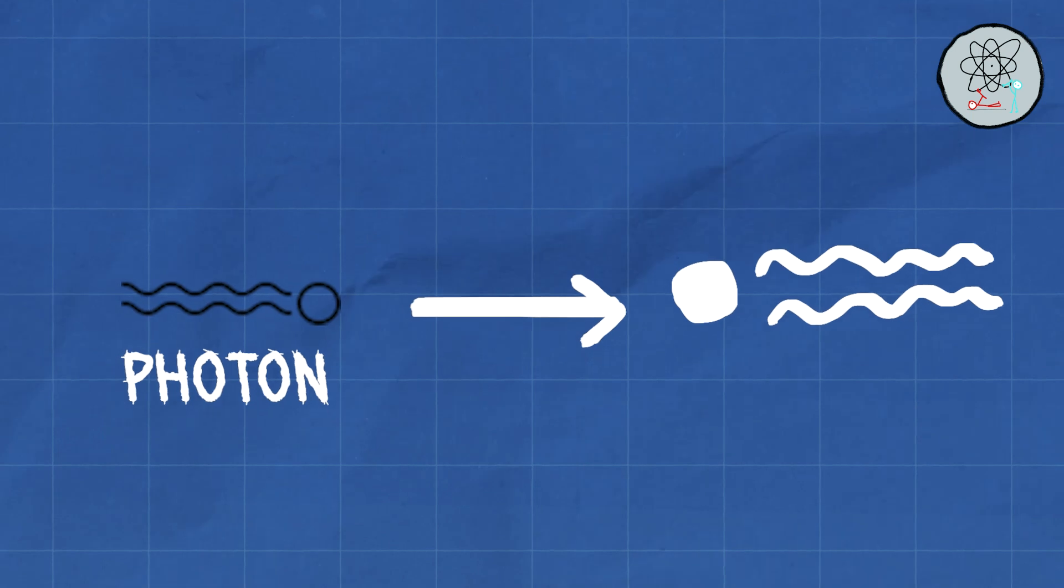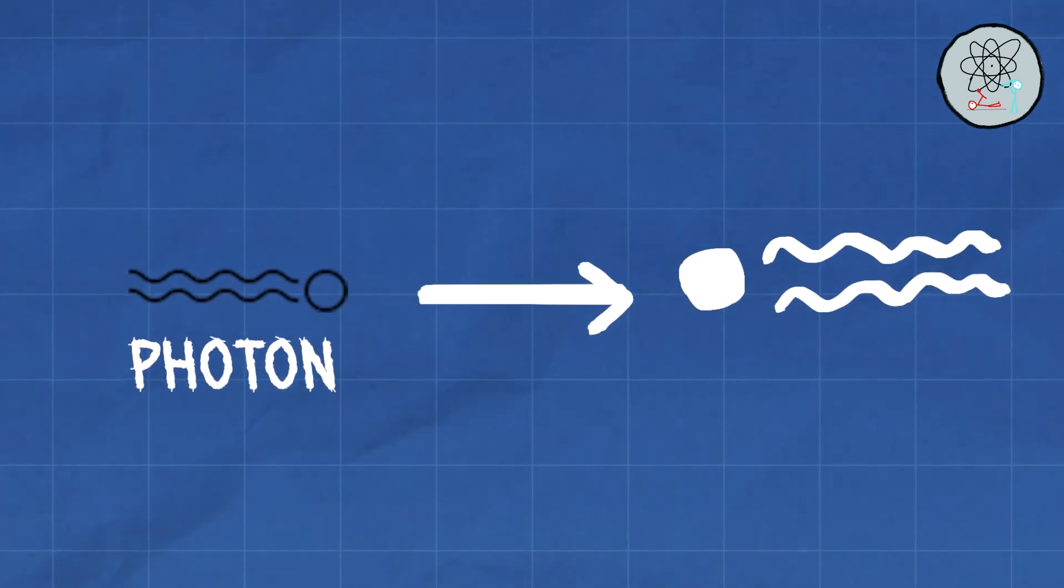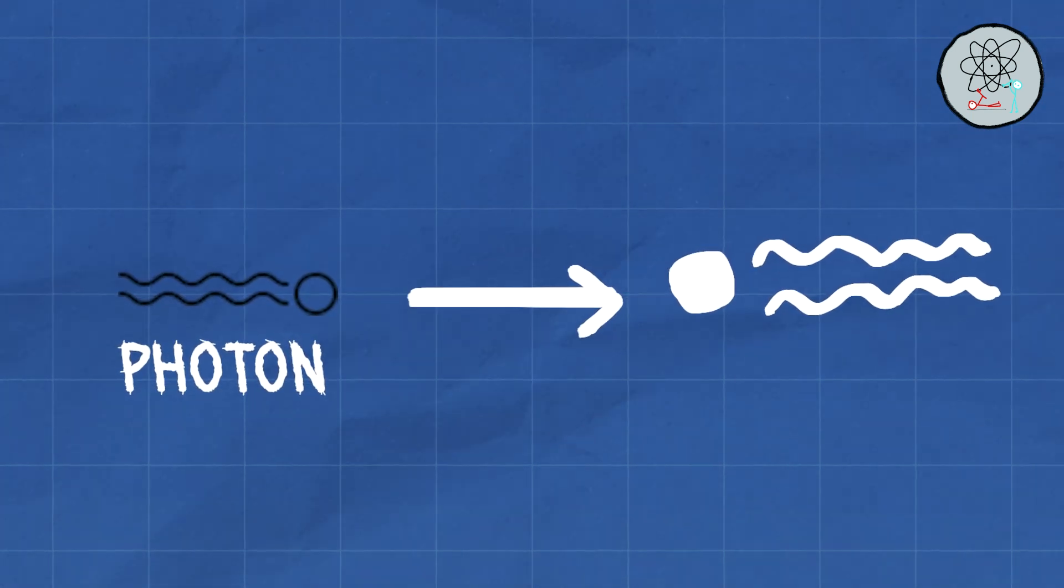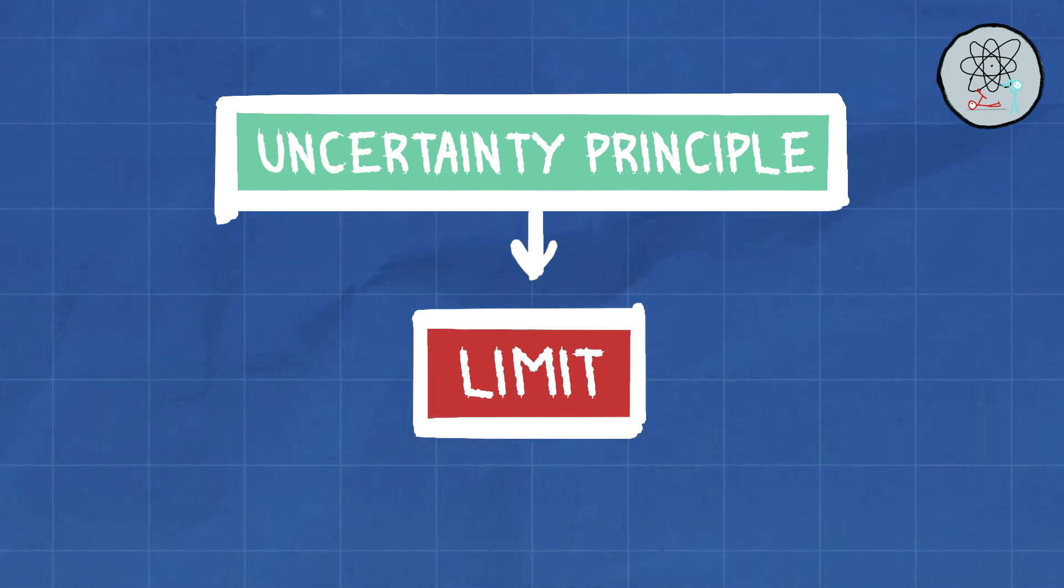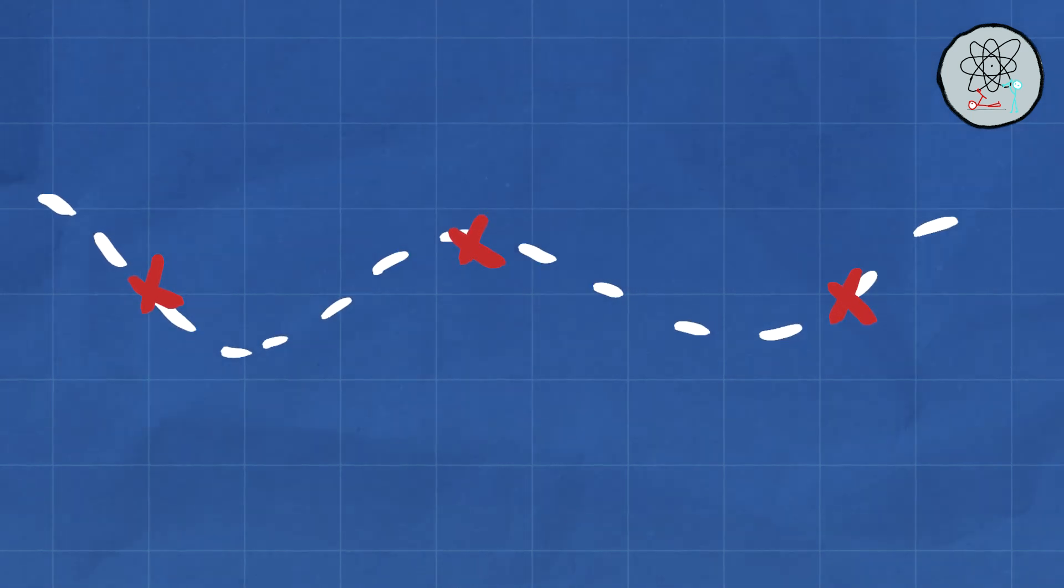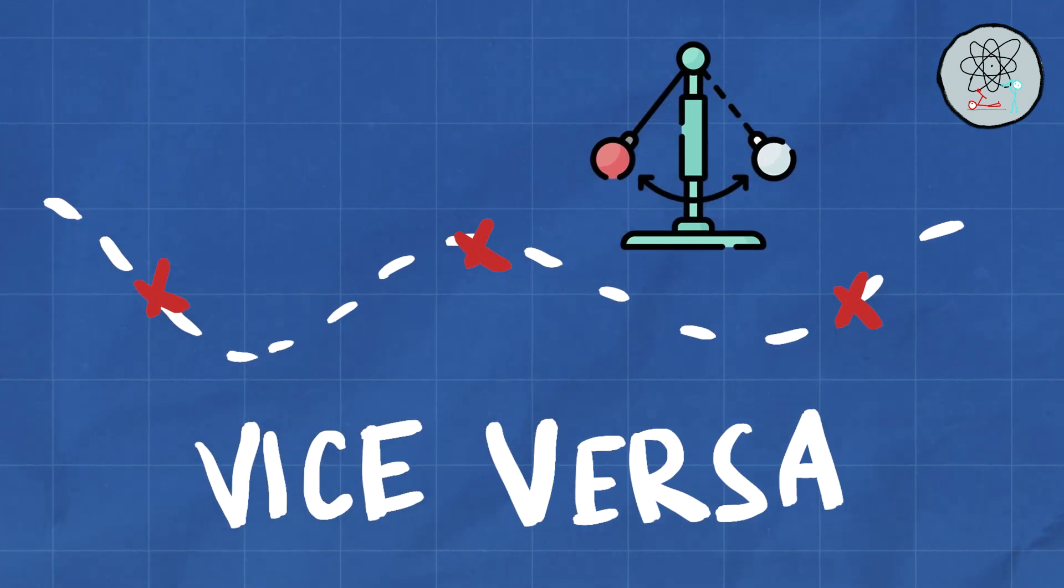It's as if reality is playing a cosmic game of hide-and-seek, blurring the lines between what we thought we knew. Getting further to the uncertainty principle, which states that there's a fundamental limit to how precisely we can know certain properties of a particle at the same time. The more precisely you know a particle's position, the less you can know about its momentum, and vice versa.